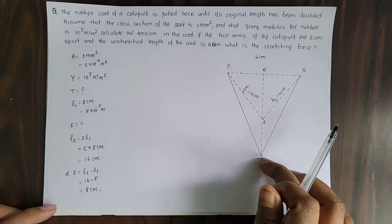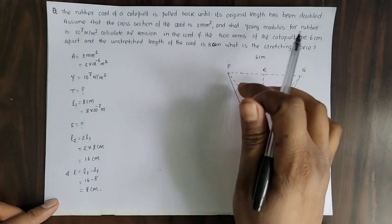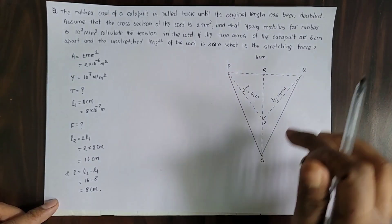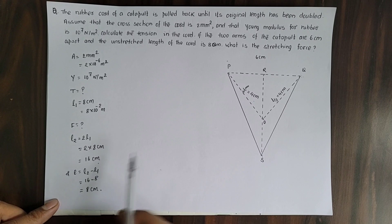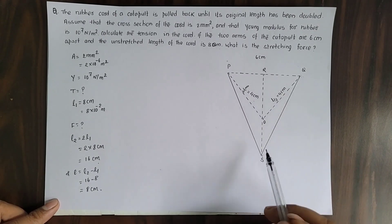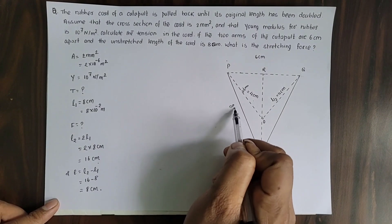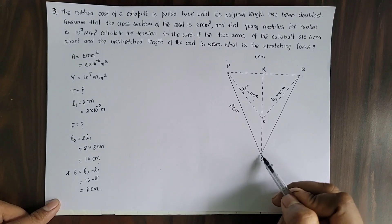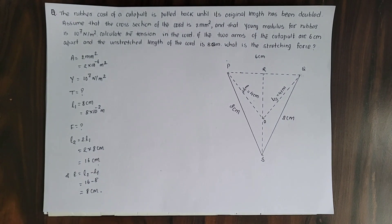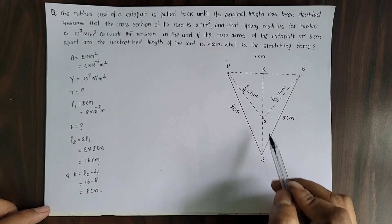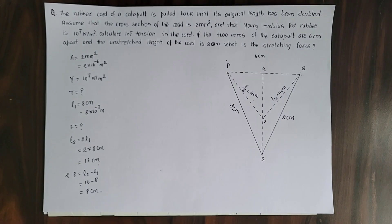When the rubber cord is pulled from O to point S, the total length of the rubber cord P-S-Q becomes 16 cm. That means the distance from P to S is 8 cm, and similarly the distance from S to Q is also 8 cm. We divide this rubber cord into two equal halves and calculate for each section.